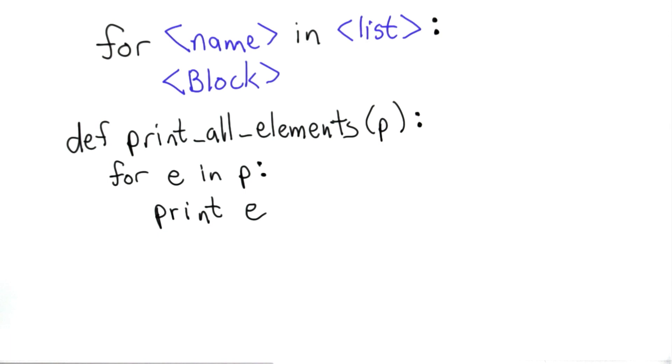So using for, we can define the procedure print_all_elements using much less code than we needed using while. We have a for statement where we'll introduce the name e as the variable name. We're going through the list p, and for each element what we want to do is just print that element.